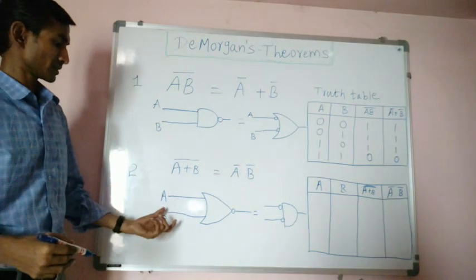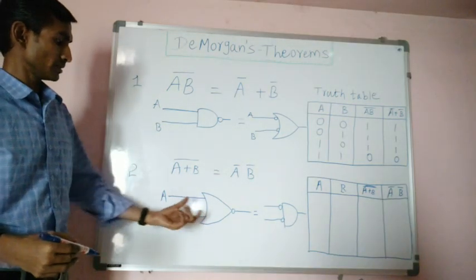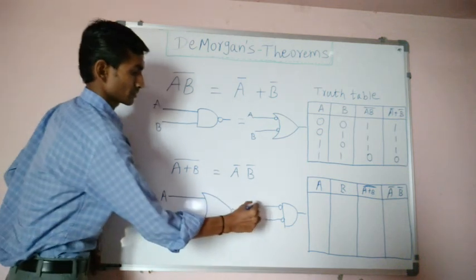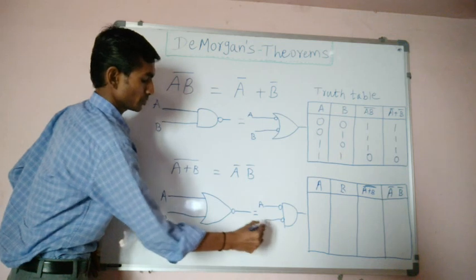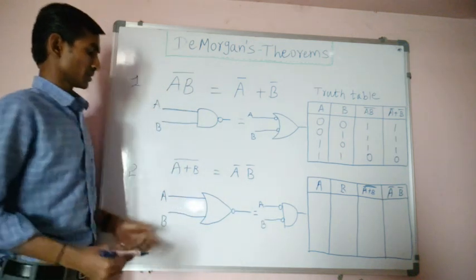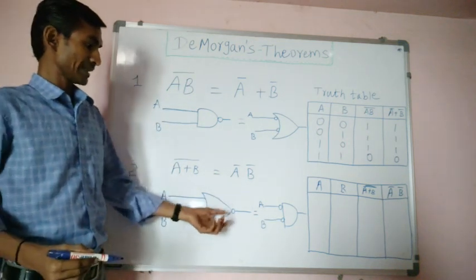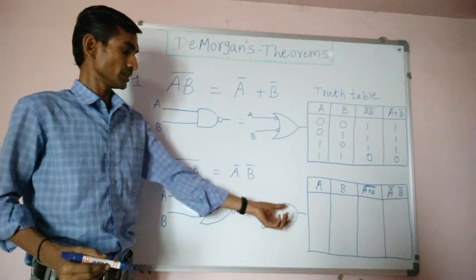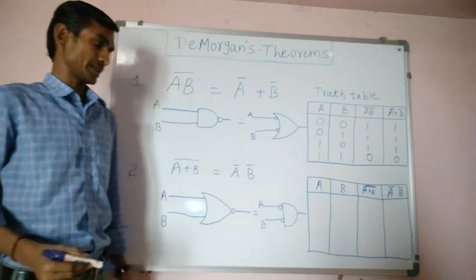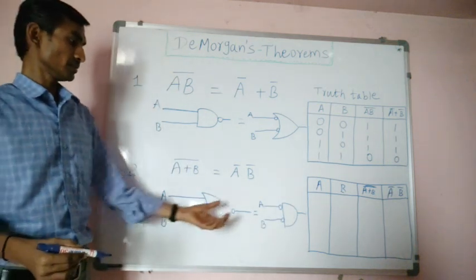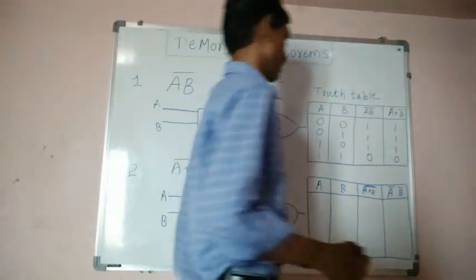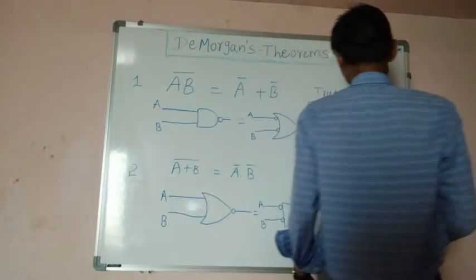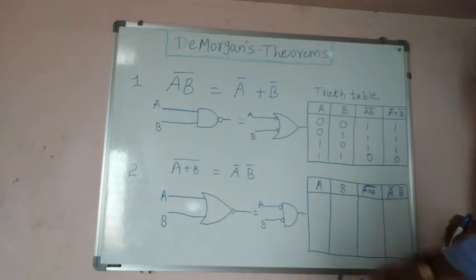So, corresponding circuit diagram here. A and B are two possible inputs. OR gate with NOT gate, NOT gate with AND gate. These are the equivalent diagrams. In the truth table, corresponding truth table for De Morgan's second theorem.